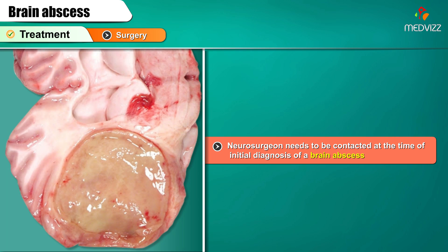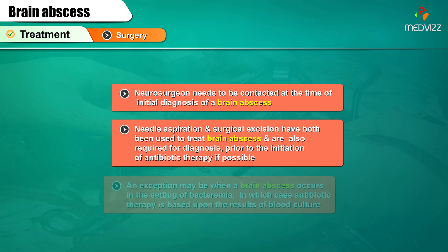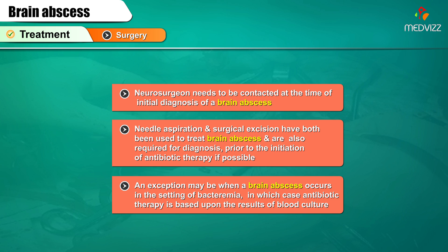Surgery: The neurosurgeon needs to be contacted at the time of initial diagnosis of a brain abscess. Needle aspiration and surgical excision have both been used to treat brain abscess and are now also required for diagnosis prior to initiation of antibiotic therapy if possible. An exception may be when a brain abscess occurs in the setting of bacteremia, in which case antibiotic therapy is based upon the results of blood culture.